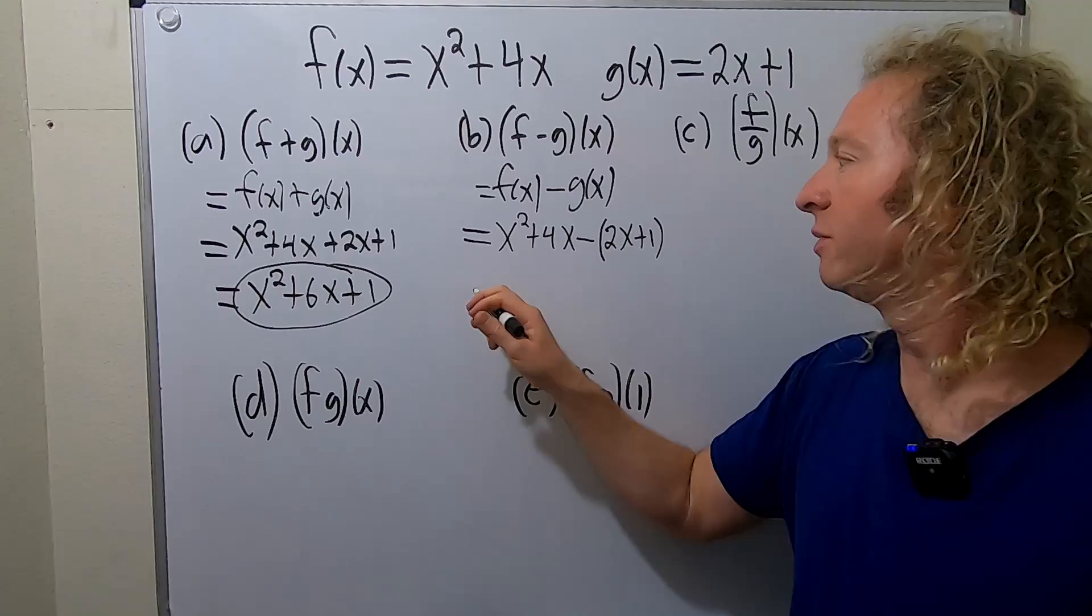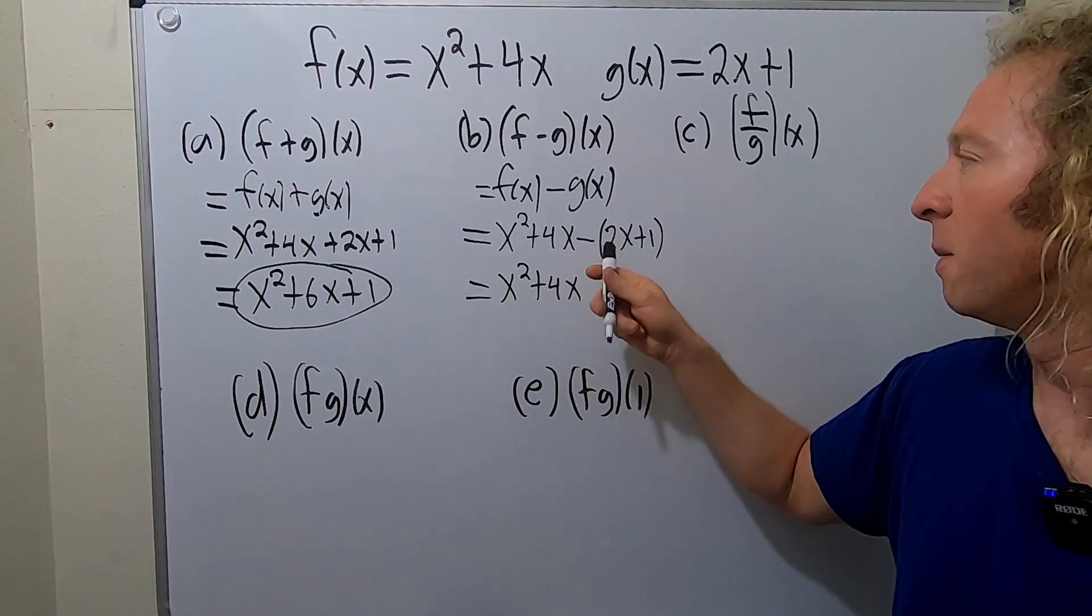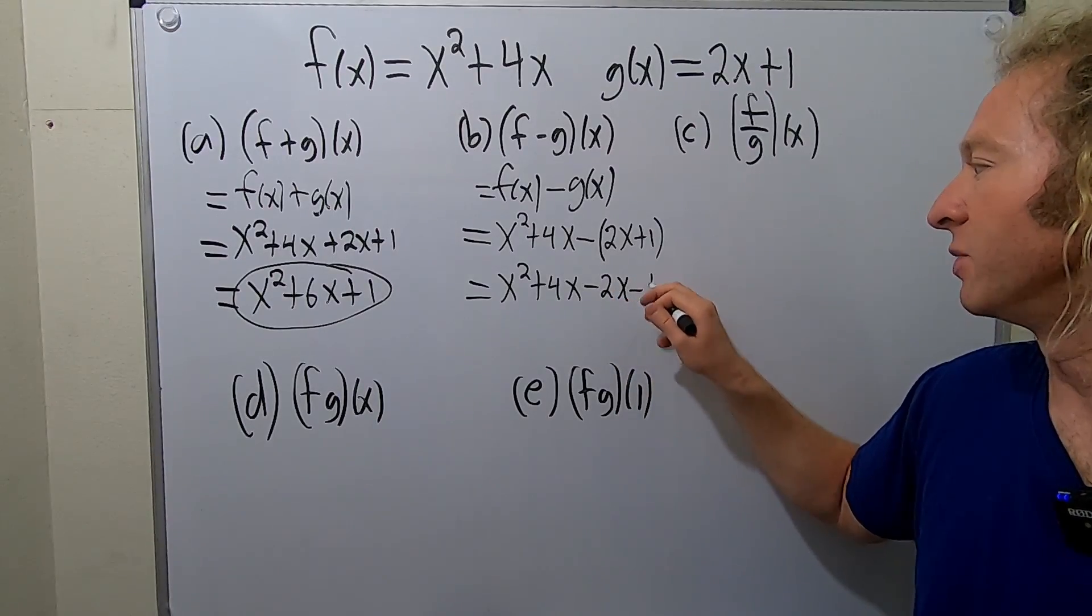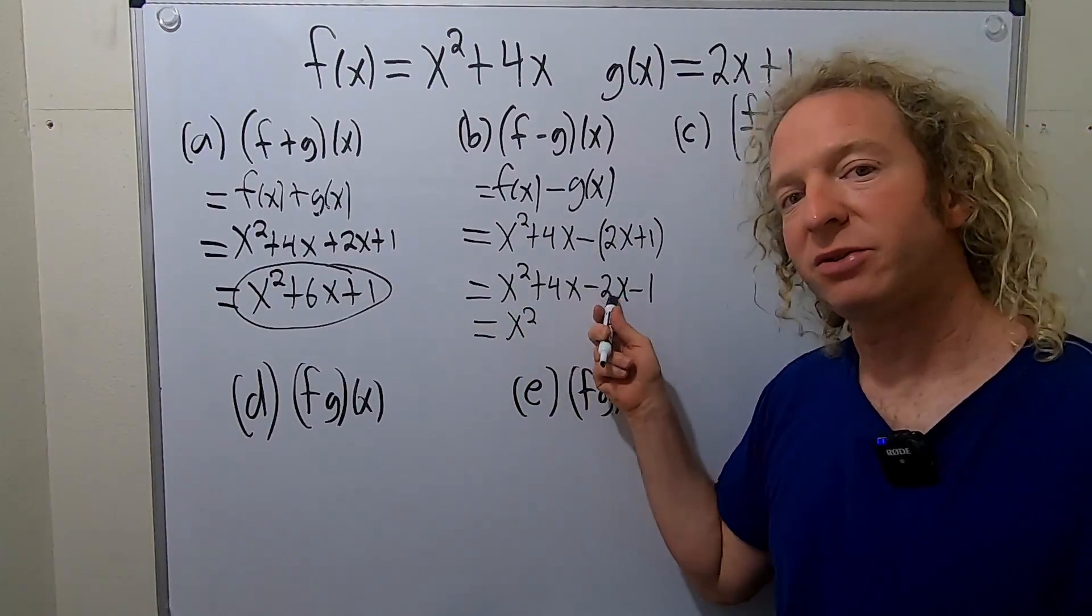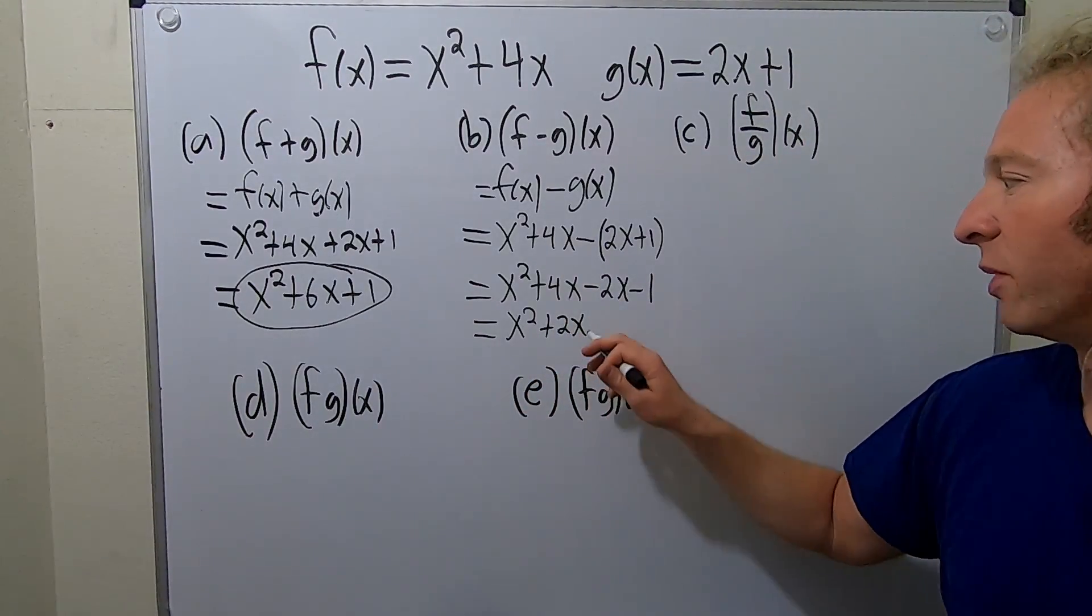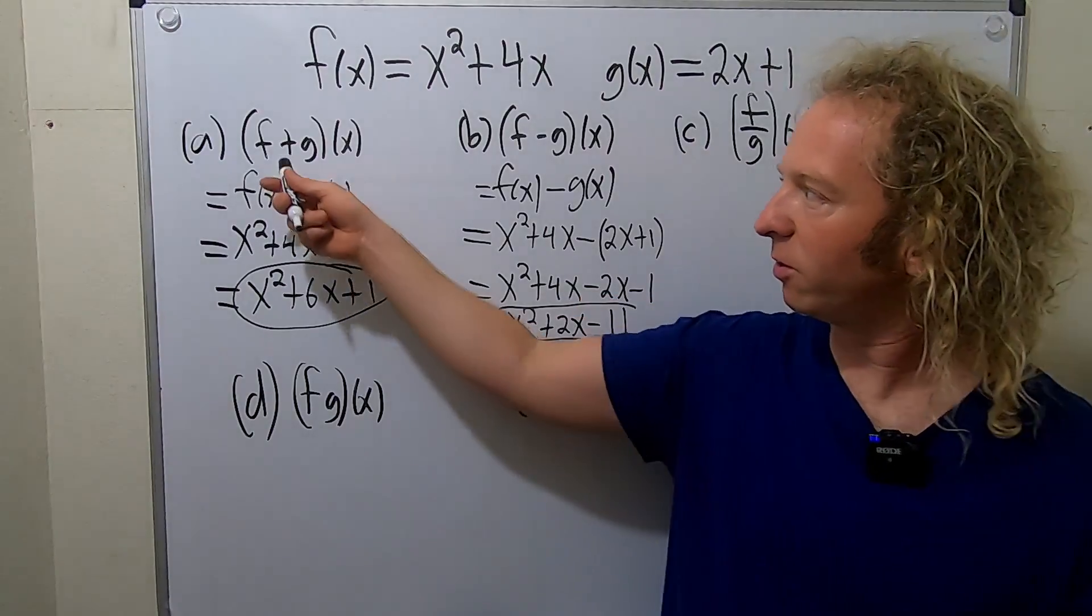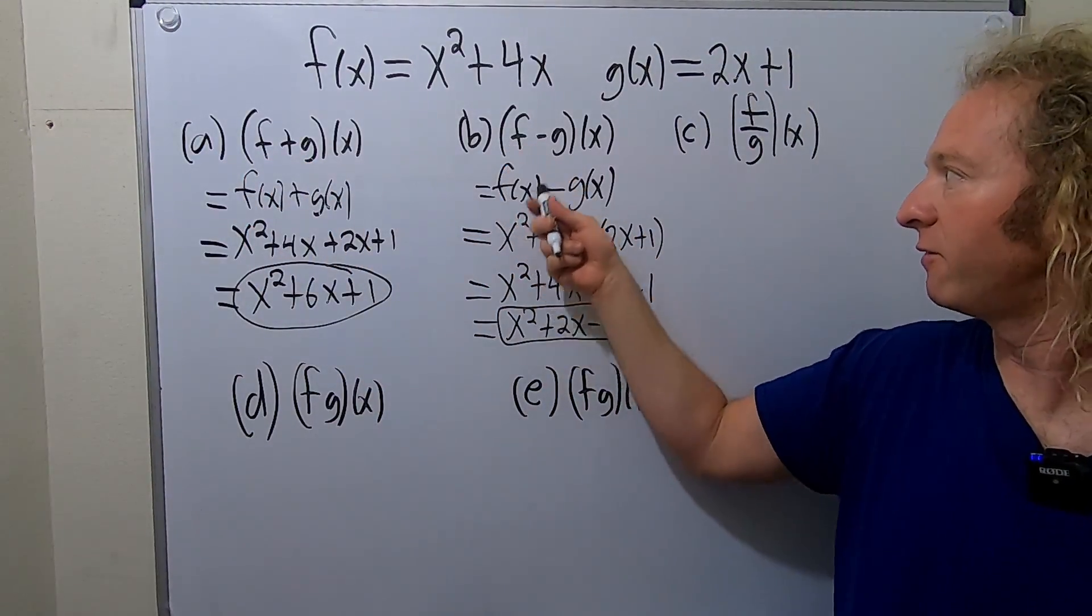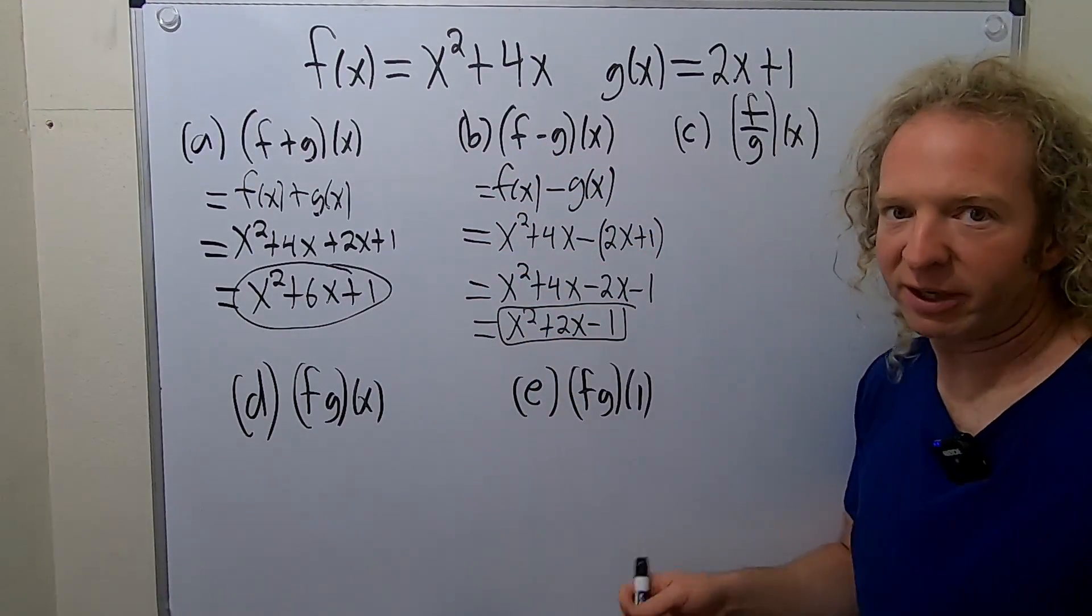All right, now you can distribute the minus 1. This will be x squared plus 4x minus 2x minus 1. So minus 2x minus 1. This will be x squared, 4x minus 2x is 2x, and then we have our minus 1. And that's it. So again, just like before, like here we replace f with f and g with g, and we put a plus. Same thing here. f with f, g with g, we put a minus. And then just carefully be careful. Super careful.